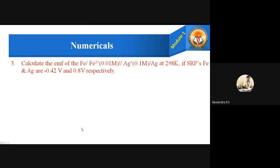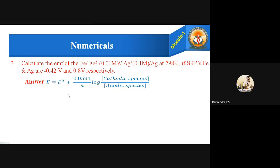Let us move to the third problem, which is a different kind. Calculate the EMF of the cell: Fe | Fe²⁺ (0.01 M) ‖ Ag⁺ (0.1 M) | Ag at 298 K, given that the standard reduction potentials of iron and silver are −0.42 volts and 0.8 volts respectively. For this, the formula is E = E⁰ + (0.0591 / N) × log([cathodic species] / [anodic species]).